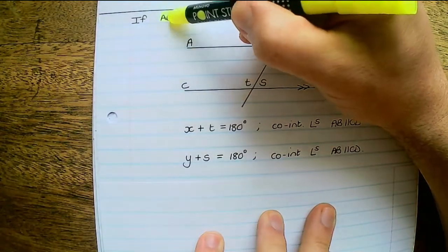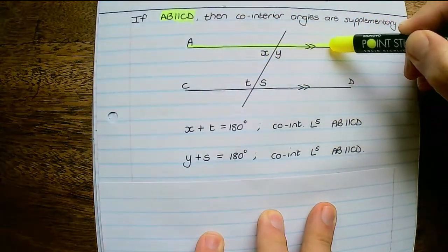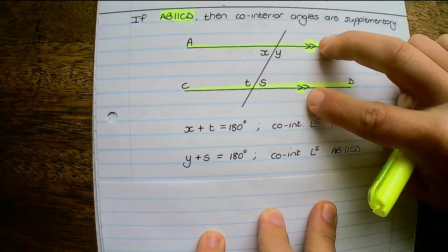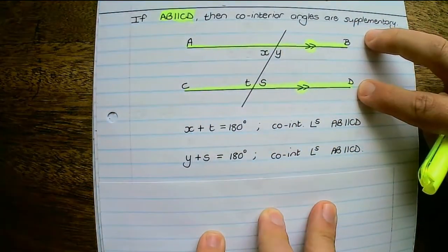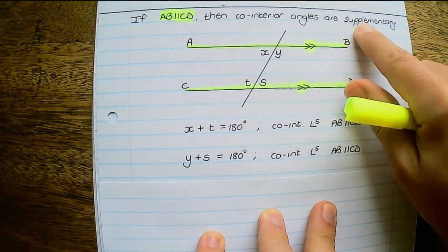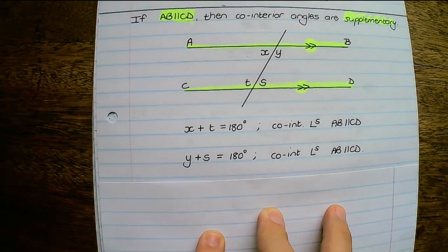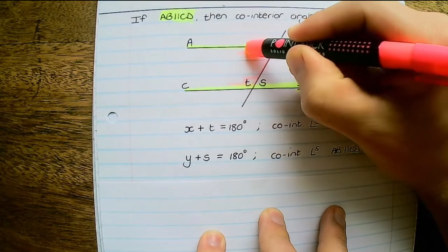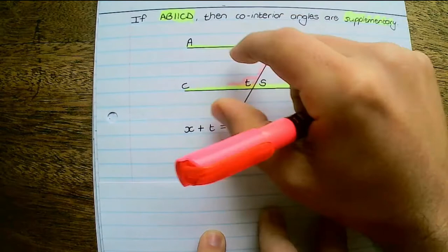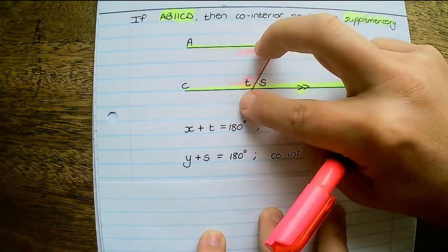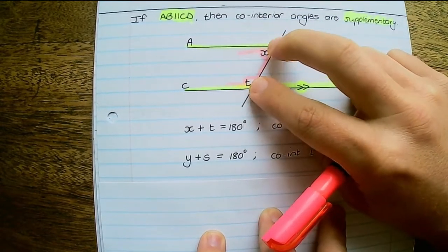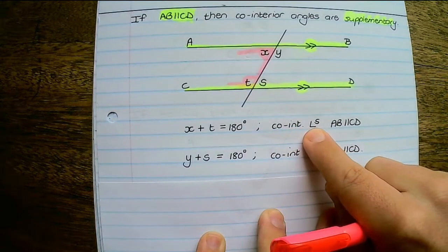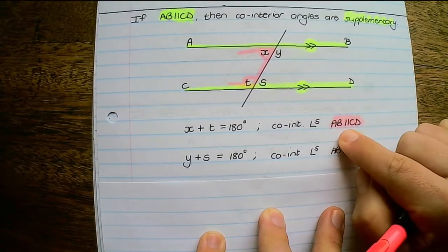Now with AB parallel to CD again — the arrows on the diagram tell us those lines are parallel. Co-interior angles are supplementary, meaning they add up to 180 degrees. Angles X and T are co-interior: they are on the inside of the U-shape formed between the parallel lines, so X plus T equals 180. The reason you use is 'co-interior angles', and remember to state the parallel lines: AB parallel to CD.